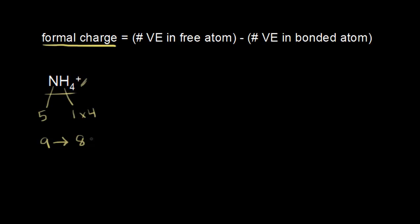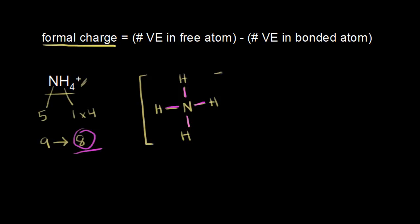Let's put nitrogen at the center. We put the least electronegative atom at the center, except for hydrogen. Nitrogen goes in the center, and we know it's going to have bonds to four hydrogens, so we go ahead and put in those hydrogens. Let's count how many valence electrons we've used up: two, four, six, and eight. That takes care of all eight valence electrons we were supposed to represent. So this is the dot structure, and I'll put some brackets around it with a plus one charge to indicate it's an ion.